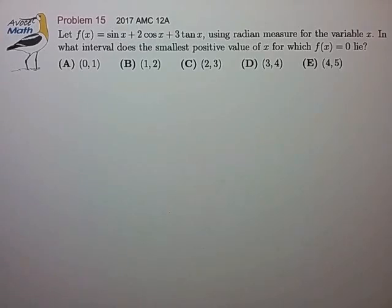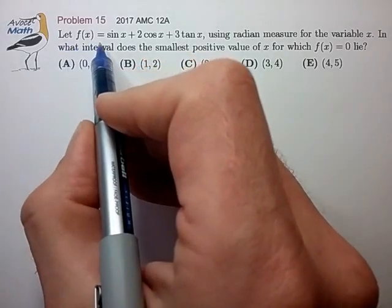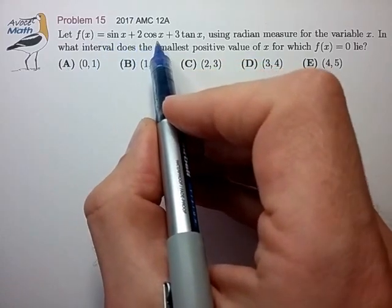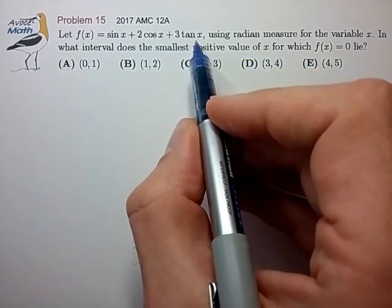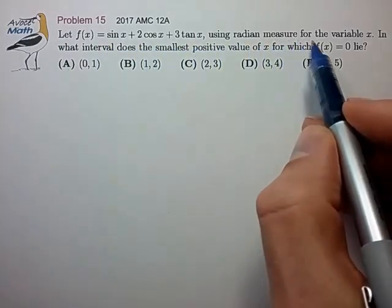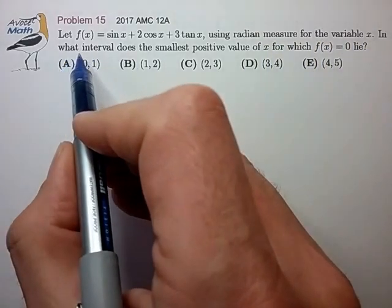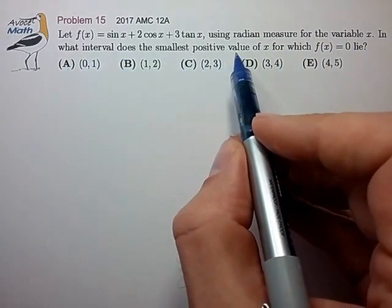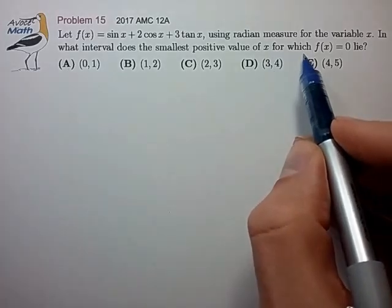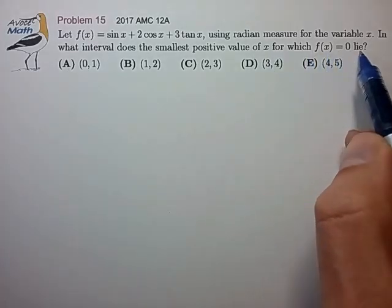Hi, this is problem 15 from the AMC 12a. Let f of x equal sine x plus 2 cosine x plus 3 tan x, using radian measure for the variable x. In what interval does the smallest positive value of x for which f of x equals 0 lie?